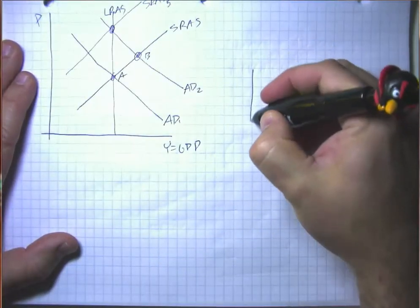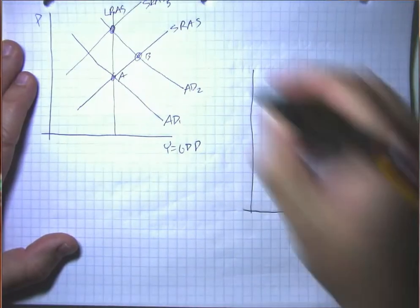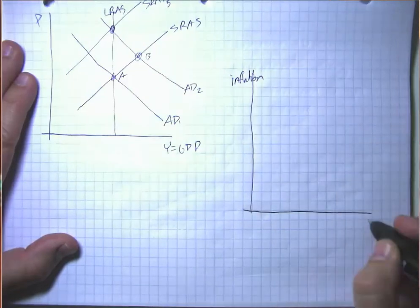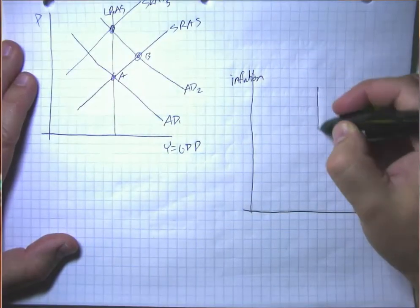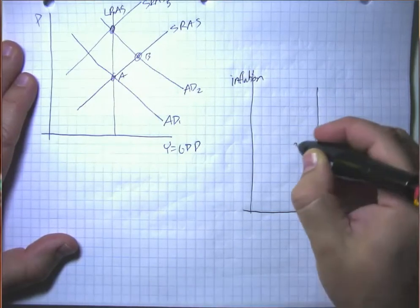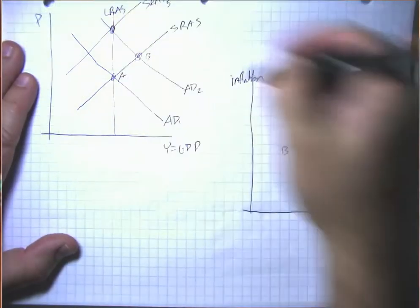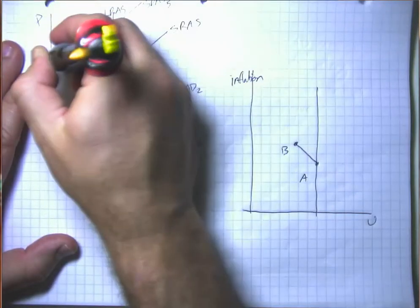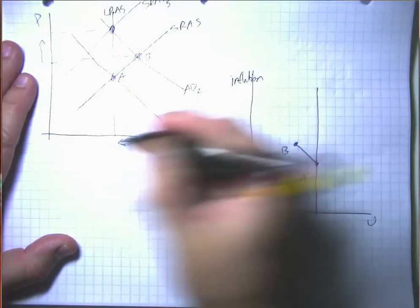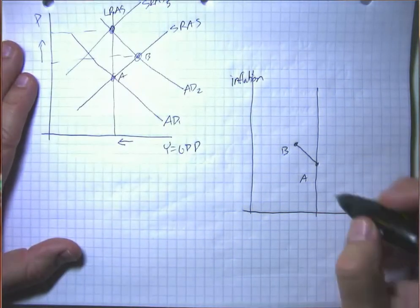Well, what does that look like in Phillips curve language? In Phillips curve language, what we're saying here is that we can move from A to B along the Phillips curve, but then there are forces in the economy which are going to cause further inflation and cause GDP to go back to its normal level.